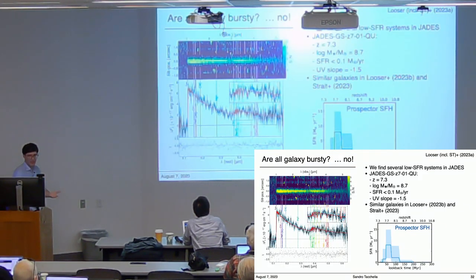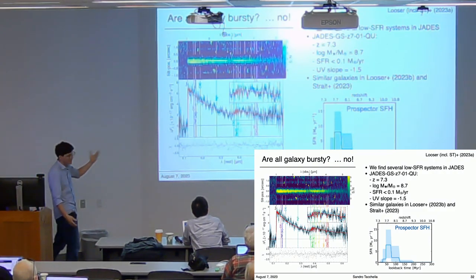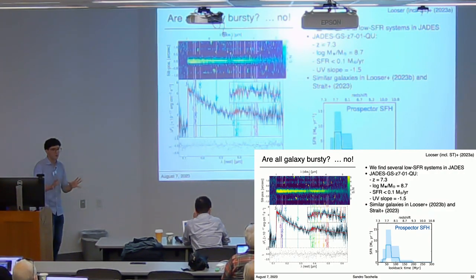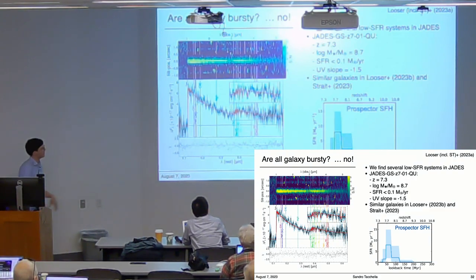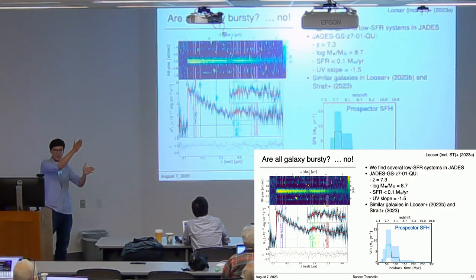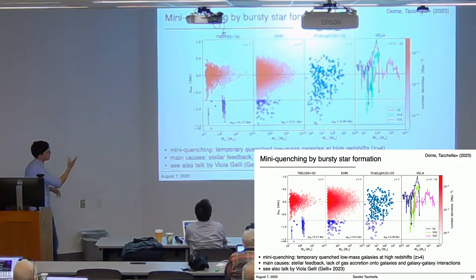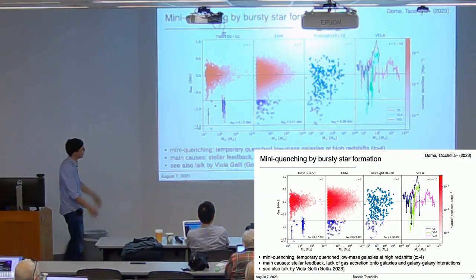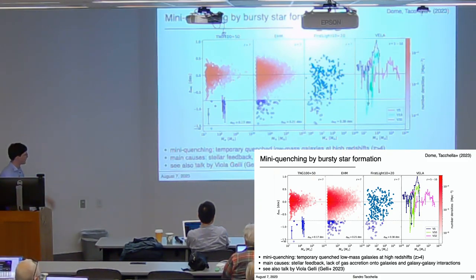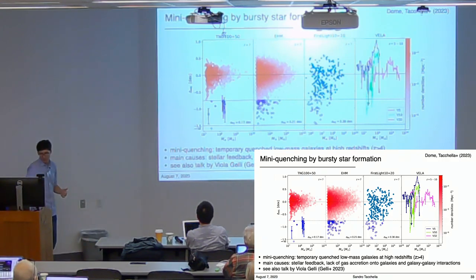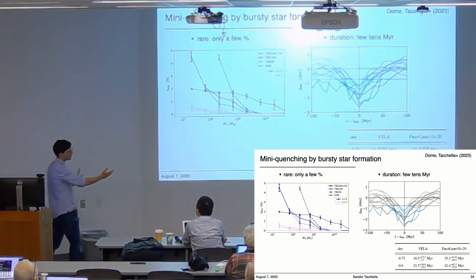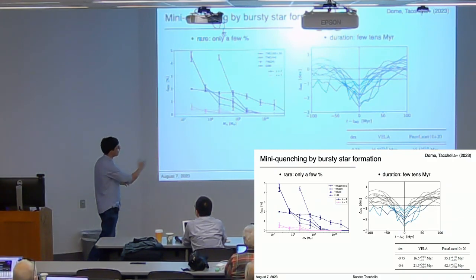Are all galaxies going through a burst? There are also quiescent galaxies being detected—quite different from massive galaxy quenching, focusing on the low-mass end of 10^7–10^9 solar masses. These galaxies are expected if you have bursts of star formation followed by suppression. Looking at a wide range of models, these quiescent systems are present across many simulations. The quenching phase is temporary: in all models, galaxies are only quiescent for a few tens of millions of years, with only a few percent of the galaxy population in this phase at any given time.